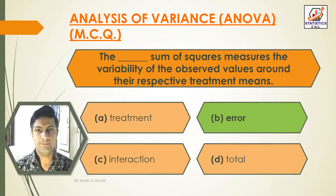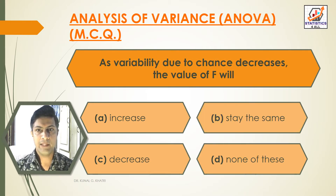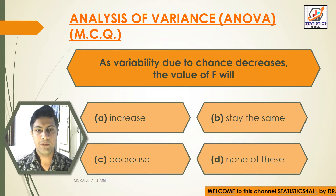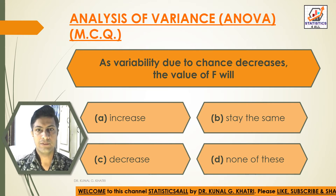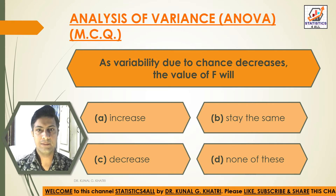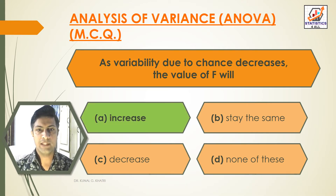Next question: As variability due to chance decreases, the value of F will — Option A: Increase. Option B: Stay the same. Option C: Decrease. Option D: None of these. Answer: Option A, Increase. As variability due to chance decreases, the value of F will increase.